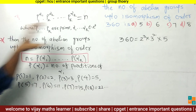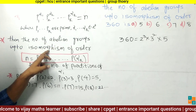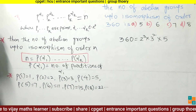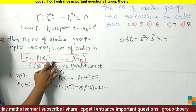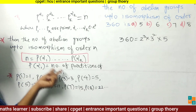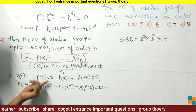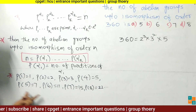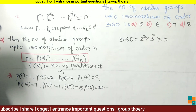By using this formula, we solve this problem. The number of abelian groups up to isomorphism of order n equals P(α₁) × P(α₂) × ... × P(αₖ), where P(αᵢ) is the number of partitions of αᵢ. Remember these values: P(1)=1, P(2)=2, P(3)=3, P(4)=5, P(5)=7, P(6)=11, P(7)=15, P(8)=22.